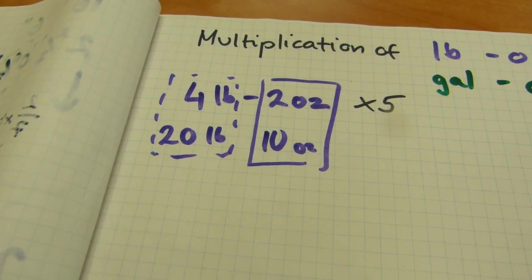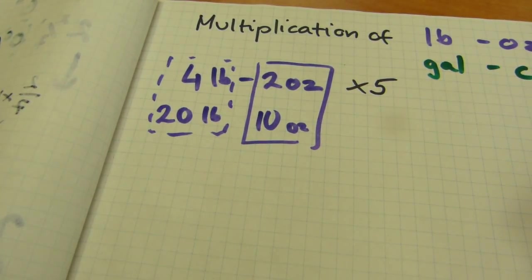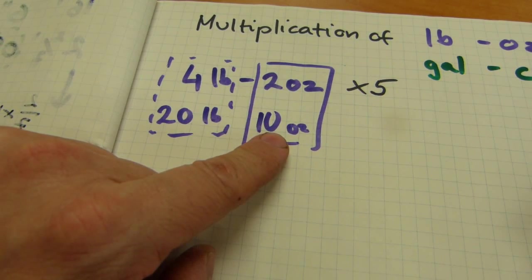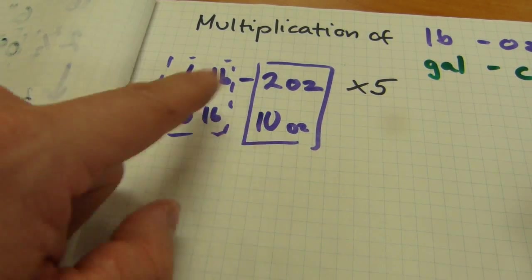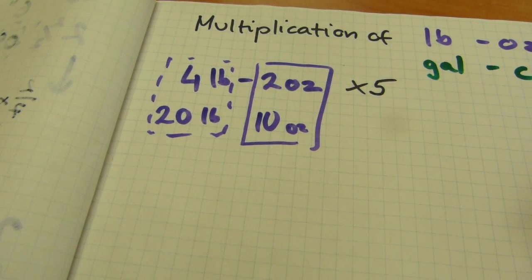In the next example, with pounds, that's going to be a little more complex. There's going to be amounts that are more than fifteen in the ounces column and they need to be carried over in multiples of sixteen to make pounds.